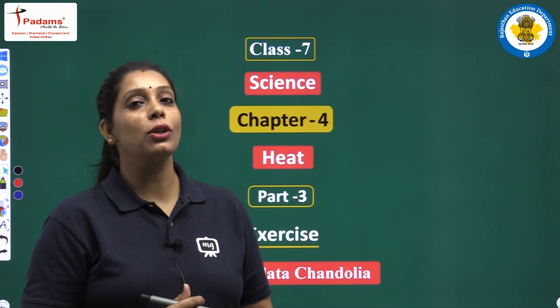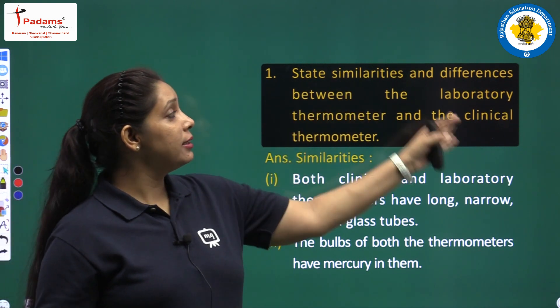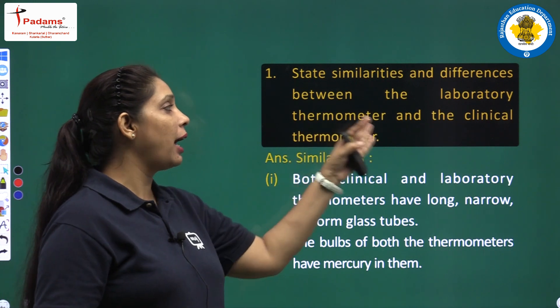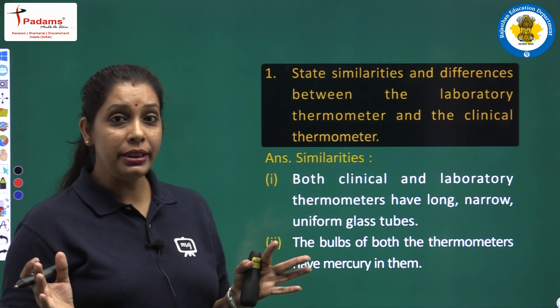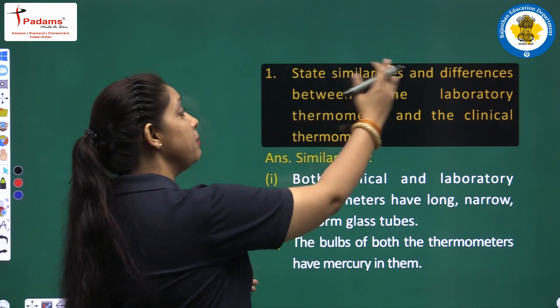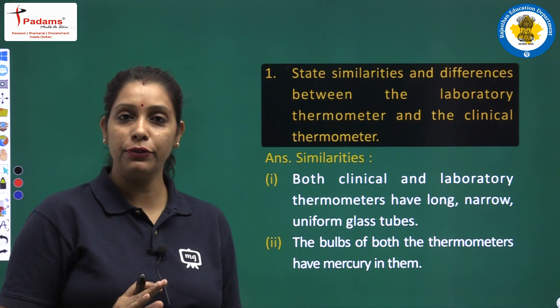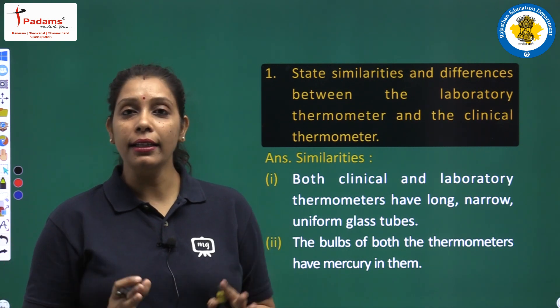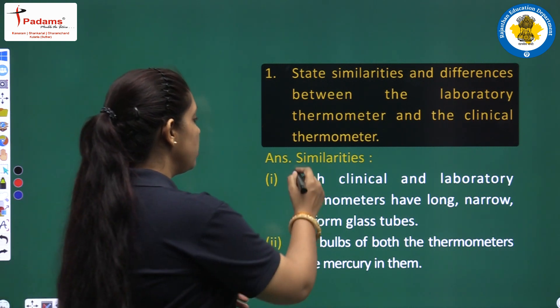Let us begin with question number 1. Question number 1 is state similarities and differences between the laboratory thermometer and clinical thermometer. The question is state similarities and differences, so we have to write down similarity first and after that we will write differences.